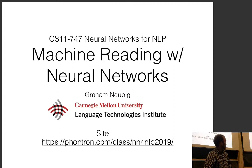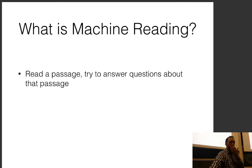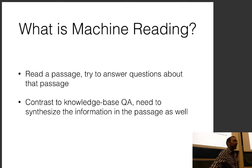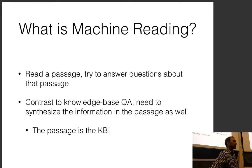This time I'm going to talk about machine reading with neural networks. Machine reading is basically reading a passage and trying to answer questions about that passage. This is in contrast to knowledge base-based QA, where a structured knowledge base lets you get the answer directly. In machine reading, you need to synthesize the information in the passage. The passage itself is essentially the knowledge base.